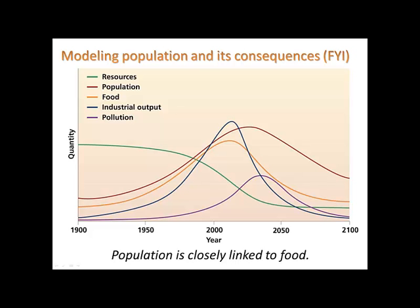We can model population and its consequences. Population, shown in dark red, has risen since 1900. Notice how food production closely parallels the changes in population. According to this graph, our food production is getting more difficult. So how is that going to affect our population? Will that trend continue?